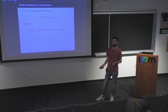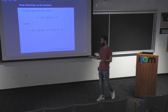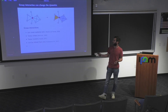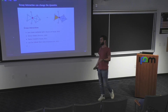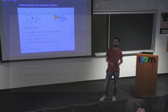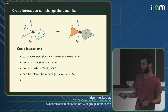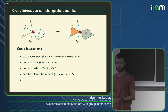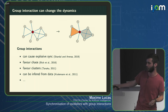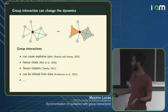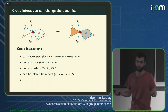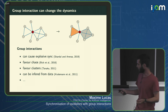One of the papers on these phase reduction techniques is from Arkady, Misha, and Eric Gengel. Basically, we go from pairwise descriptions to descriptions including filled triangles and tetrahedra — that's just a visual representation. There have already been a few studies on that, and people have shown that having these interactions can change the dynamics quite significantly. For example, they can make you go from a continuous transition to synchronization to an explosive one, can favor chaos, can favor cluster synchronization, and we can also infer these interactions from data.